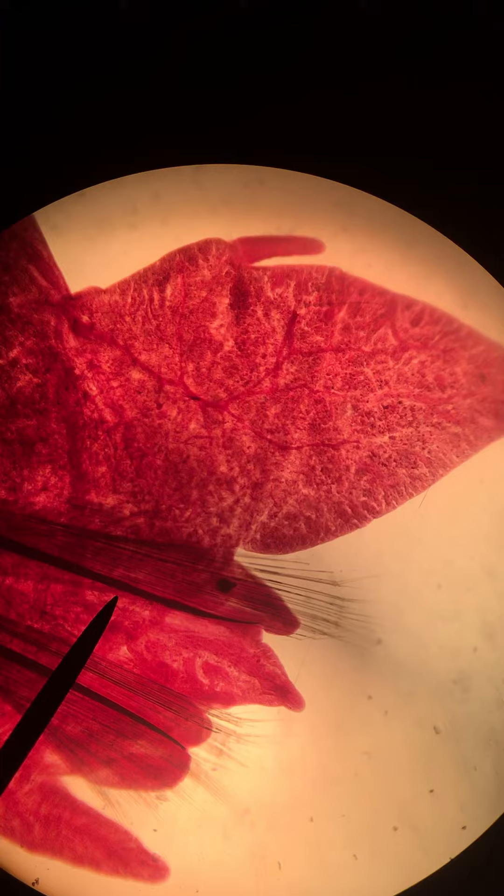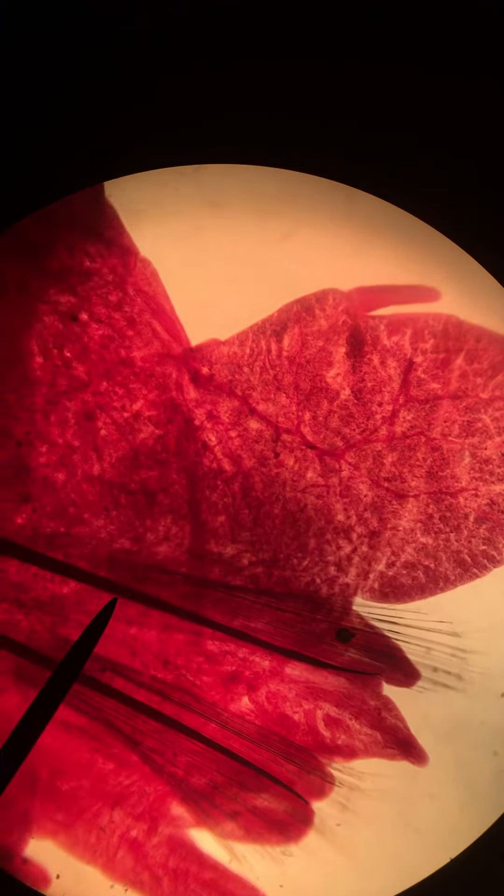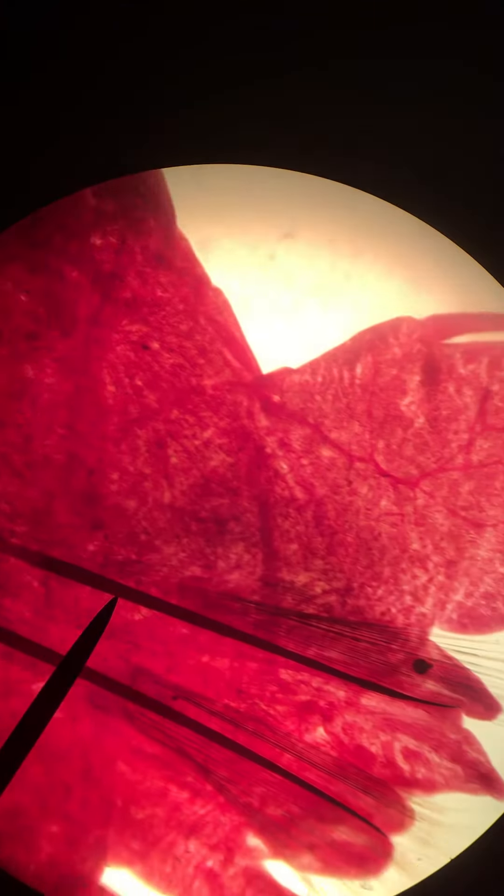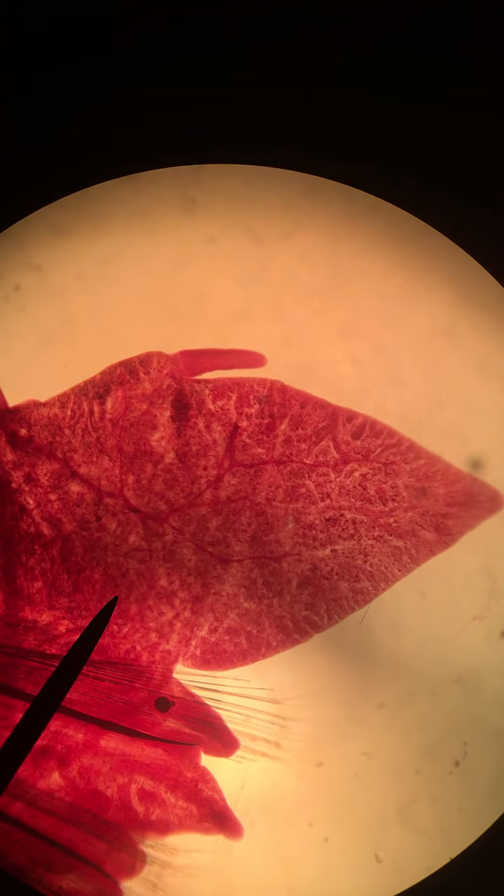As you go from head to tail, there are lots and lots of body segments and each segment has its own pair of parapodia. The parapodium itself has been detached from the worm already, and it has a branched structure.